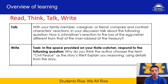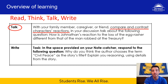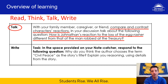For the talk part, you're going to engage with a family member, caregiver, or a friend, and you're going to compare and contrast the characters' reactions throughout the story. In your discussion, specifically talk about the following question: how is Jonathan's reaction to the loss of the egg rasher different from that of the man robbed at the treasury?